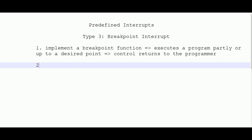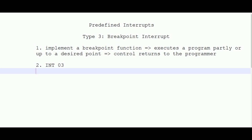Since this is a type 3 interrupt, the software instruction is INT 3 or INT 03 — both are the same. Likewise, for type 2 (NMI) you would write INT 02H. Both the type 3 breakpoint interrupt and type 1 single step interrupt are used to debug a program by executing it part by part. The breakpoint interrupt is specifically used for debugging the program.